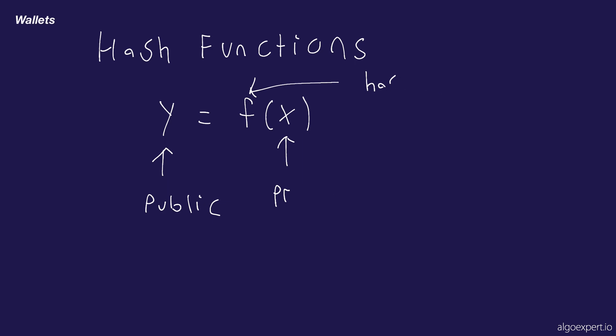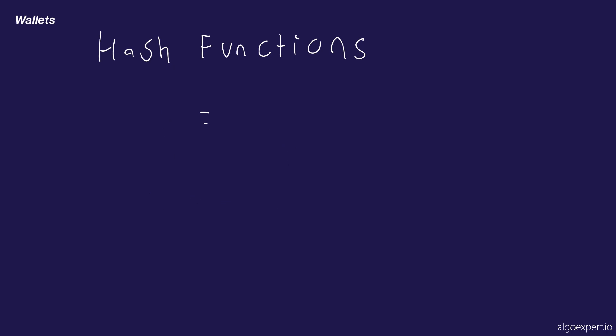So that's the first property of hash functions: there's no known inverse, and it's very difficult to determine what the input was to generate the output. The next property of hash functions is that they're very fast to compute. Although these are complicated algorithms, they don't take a long time at all — in fact, they're pretty well instant to compute. So you don't need to wait any amount of time when you're actually trying to check a hash.